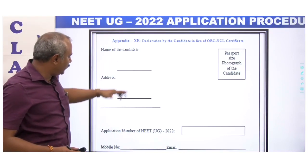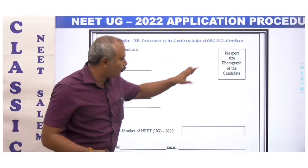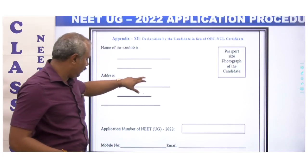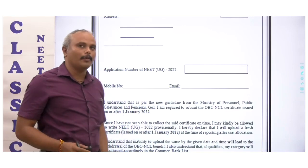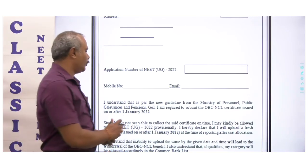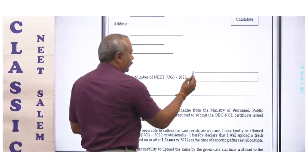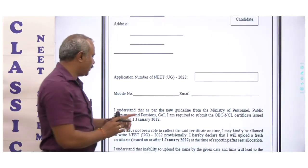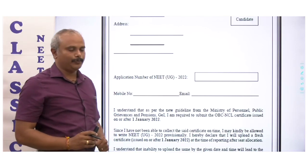The declaration format includes the candidate's name, candidate's address, and a photo. It also requires the application number — which you will receive after you apply — along with your mobile number and email ID.